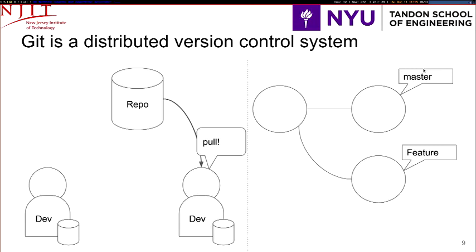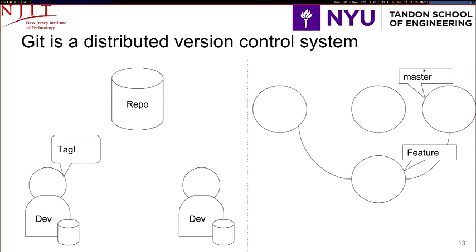After the second developer pushes the changes into master, we see that the updated state of the repository has changes from both the feature and master branches. Maybe the first developer wants to pull these changes, tag a release, and push the new tag for package maintainers and users to fetch the newest version of the software.